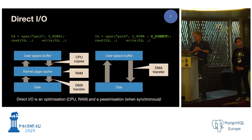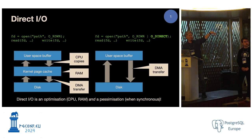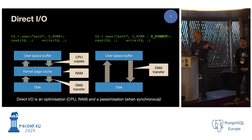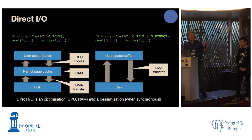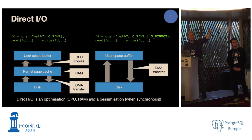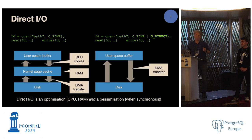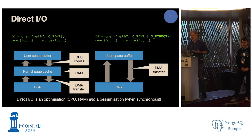The first of the three things is direct.io. Normally, when you open a file in the usual way and then call read or write into a user-space buffer, if the data is already in the kernel page cache, it just gets copied into your buffer and returns. If it's not already in the kernel page cache, an IO begins, and the DMA hardware transfers the data into the kernel page cache while your process is asleep and the CPU does something else. Then when that finishes, the data gets copied into user-space. If you use direct.io, the DMA hardware does the transfer directly to the device, which means you skip a whole lot of stuff. This is clearly an optimization in terms of CPU usage and RAM usage.